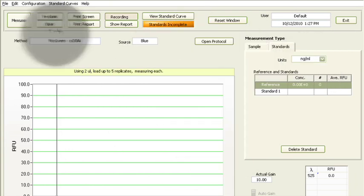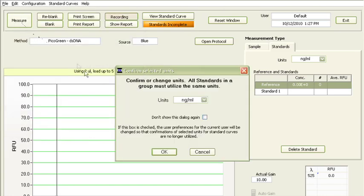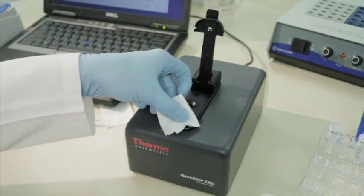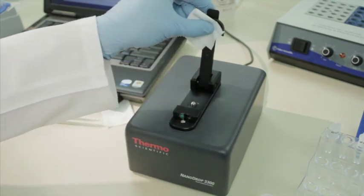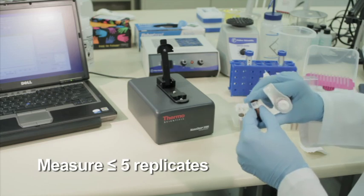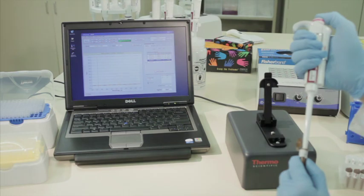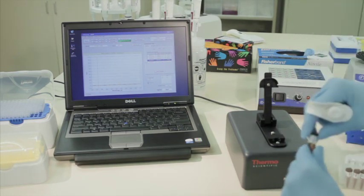Click Measure to initiate the measurement cycle. When the measurement cycle is complete, open the lever arm and thoroughly blot off the sample retention system surfaces. Measure up to 5 replicates of the reference using a fresh aliquot for each replicate. Repeat the process for the additional standards to build a standard curve.